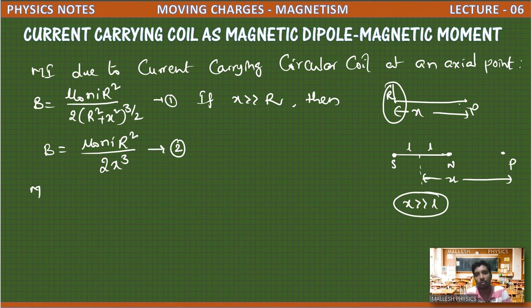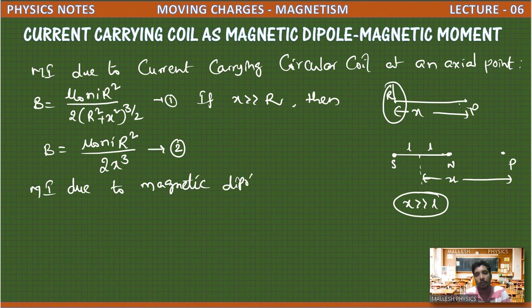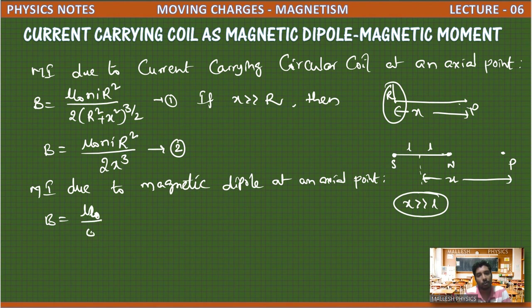Magnetic induction due to a magnetic dipole at an axial point is given by: B = μ₀ / 4π × 2m / x³. This is equation 3.